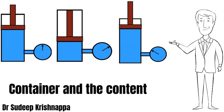Now, if we keep the volume of the container constant at 5 liters and reduce the content from 5 to 4 liters, it reduces the pressure inside. Conversely, if the container is at 5 liters and we increase the content from 5 to 6 liters, the pressure goes up. Now let us replace the container with the vascular tree.